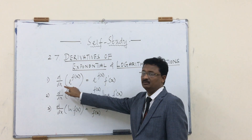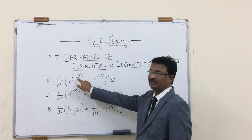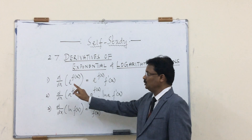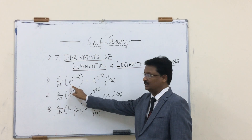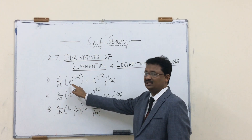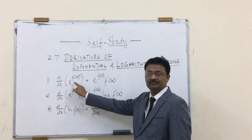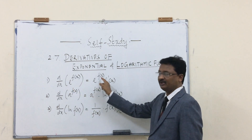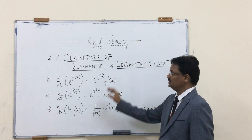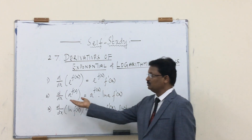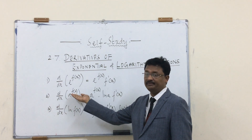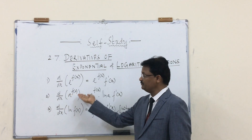The first rule: what is the derivative of e to the power of f(x)? For the exponential form we have two forms — one with base e, another with base a. The derivative of e to the power of f(x) is e to the power of f(x) times f′(x). This is rule number one.